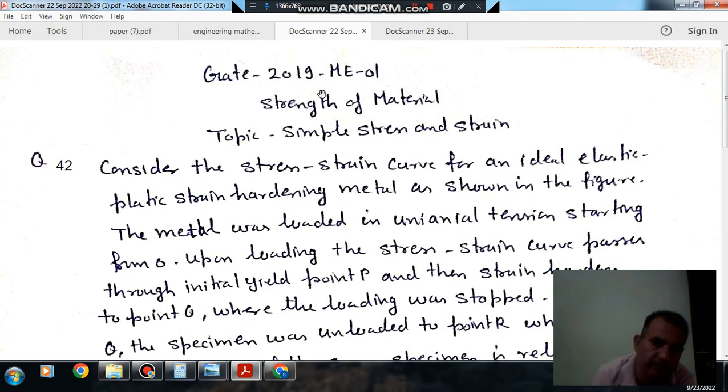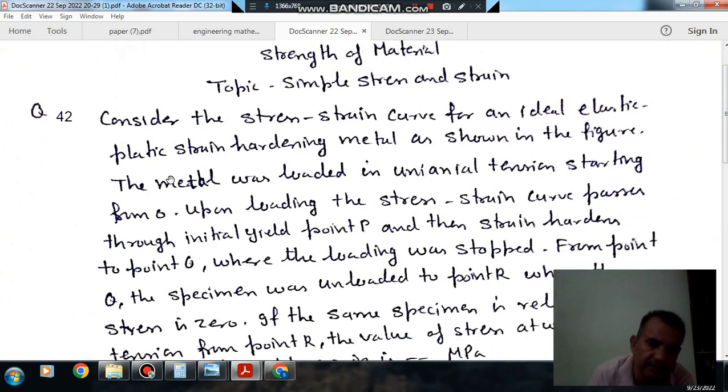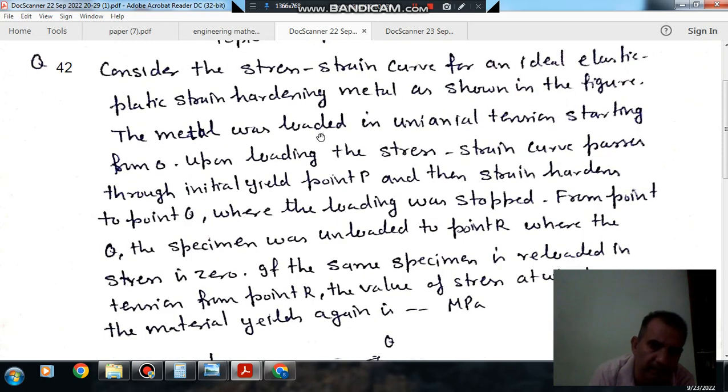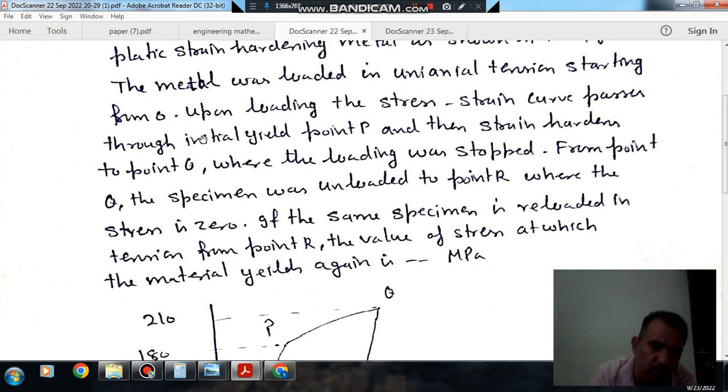Question number 42 from GATE 2019 ME-01. Consider the stress-strain curve for an ideal elastic plastic strain hardening metal as shown in the figure. The metal was loaded in uniaxial tension starting from O.